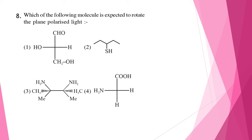Question eight: which of the following molecule is expected to rotate the plane polarized light? A chiral molecule will rotate the plane polarized light. In option one, all the groups attached to the central carbon are different, therefore that carbon is chiral. So option one is the correct answer and it will rotate the plane of polarized light.